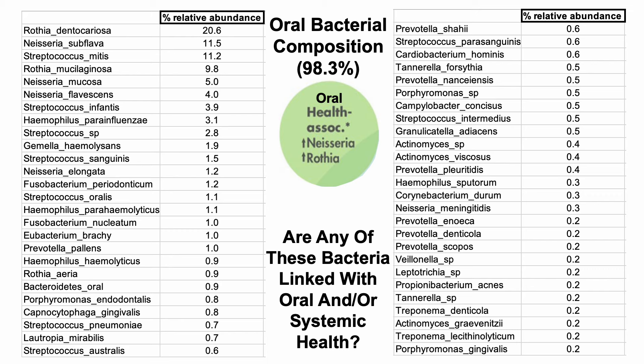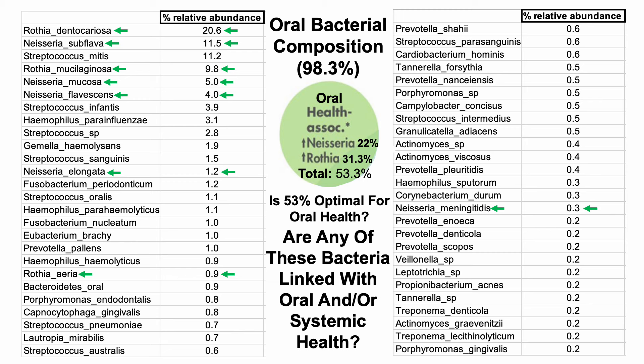In terms of bacteria linked with oral health, there are two main genera: Neisseria and Rothia. In my saliva sample, I have a decent amount of both, with a combined sum of about 53% for both Neisseria and Rothia in my salivary microbiome. Is 53% optimal? Nobody knows — there's a paucity of studies on how the oral microbiome changes during aging.